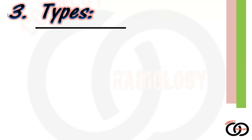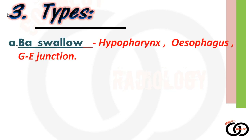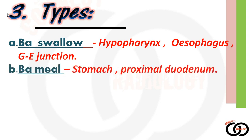Now for the types of barium study, based on what structure we want to see. The first type is barium swallow — here we make the patient ingest barium paste and then take x-rays. This paste travels through the GIT to the gastroesophageal junction, making us able to see the hypopharynx, the esophagus, and the GE junction.